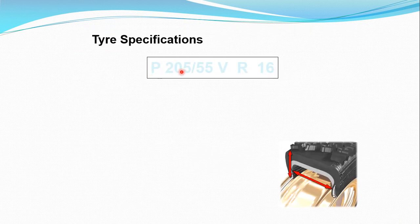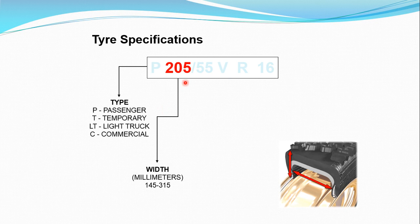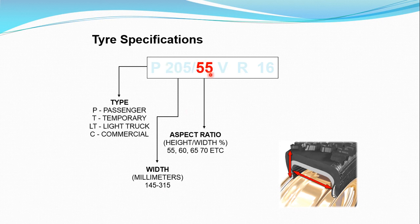Suppose it is written P205/55VR16. Here, P basically represents the passenger vehicle. 205 represents the section width in millimeters — we can also represent the same thing in inches for the two-wheel vehicle as well. 55 represents the aspect ratio, that is the ratio of height to width, expressed as a percentage — so it is 55%.